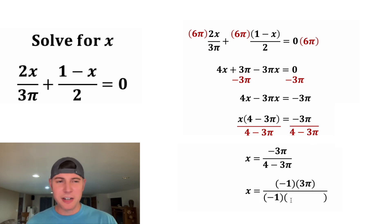And on bottom, we can also factor out a negative 1. So negative 1 times what gives us 4? Well, that's negative 4. And then negative 1 times what gives us negative 3π? Well, that's positive 3π. Now this might look even more complicated, but these two negative ones will divide each other out. And now we can get rid of these parentheses and rearrange it like this.